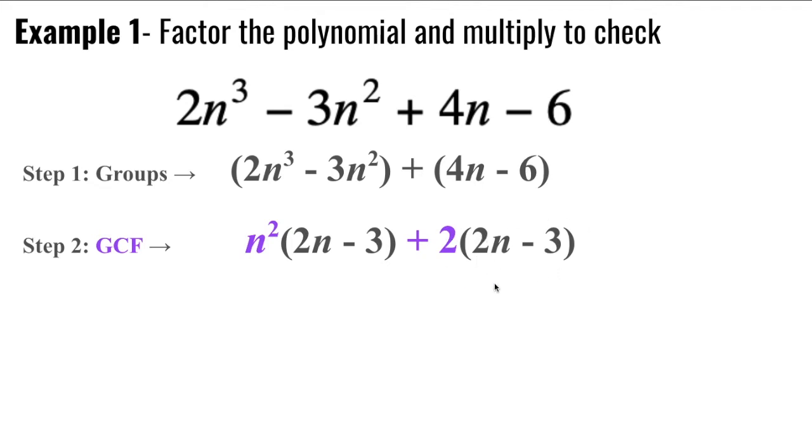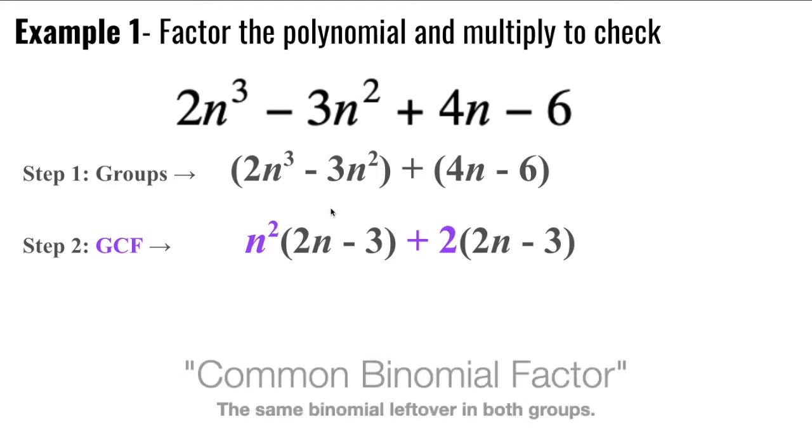Now the only way factor by grouping works is if you have what's called a common binomial factor. Notice how the remaining binomial is exactly the same in both of the original groups, 2n minus three and 2n minus three.